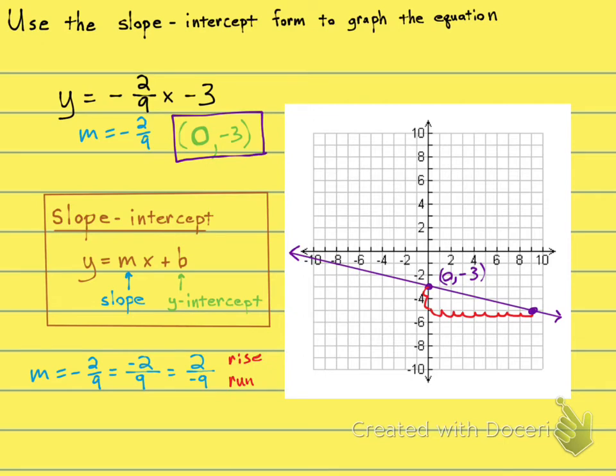If we used rise as 2 and run as negative 9, from this point right here, we would rise 2 and run negative 9. There we go. And you'll see that you'll get the same line.